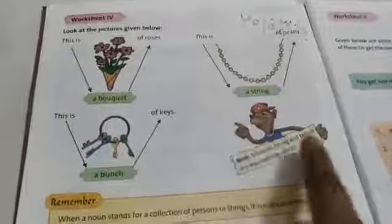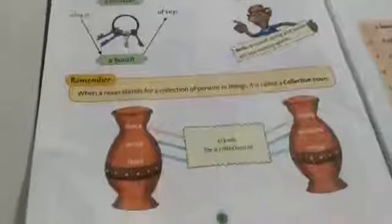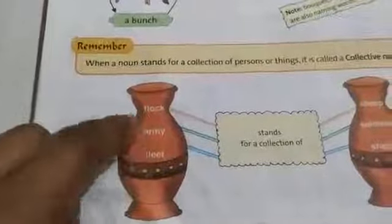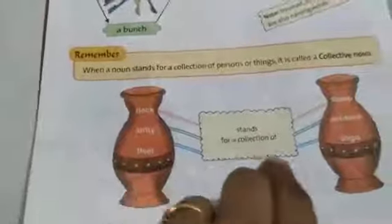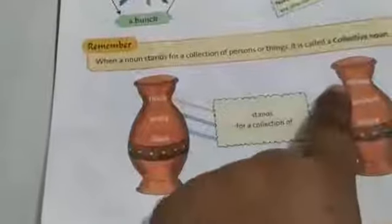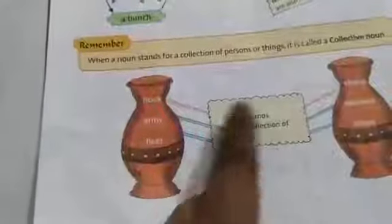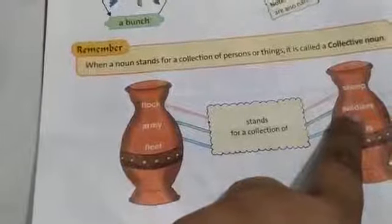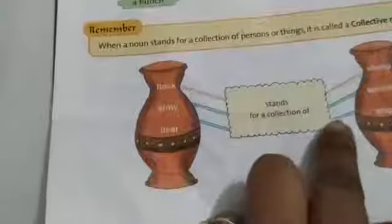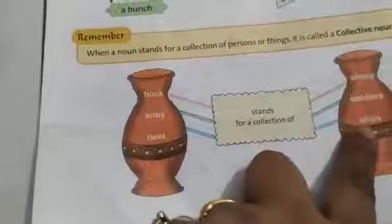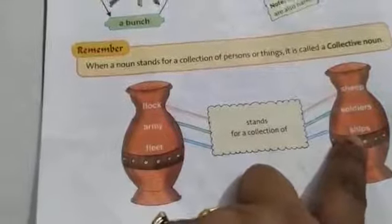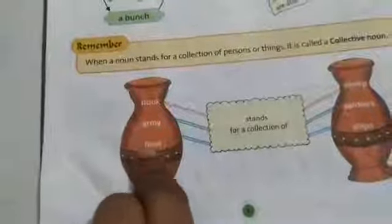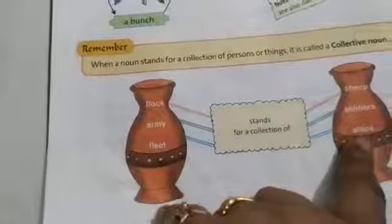Some words are there: flock, army, fleet. Flock stands for a group of sheep. Army is the collection of soldiers. Fleet is the collection of ships — fleet means the collection of ships.